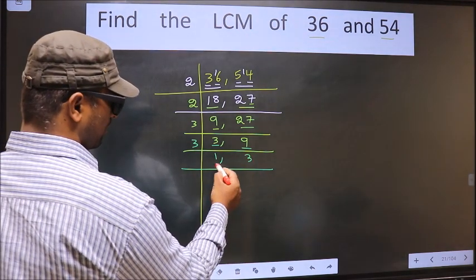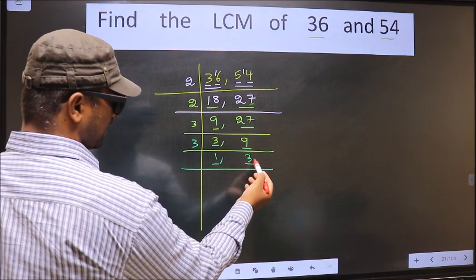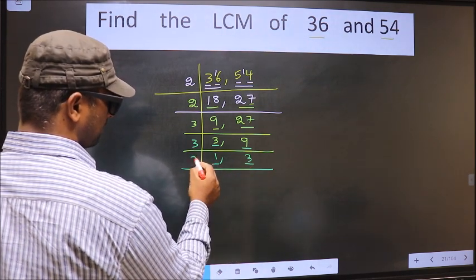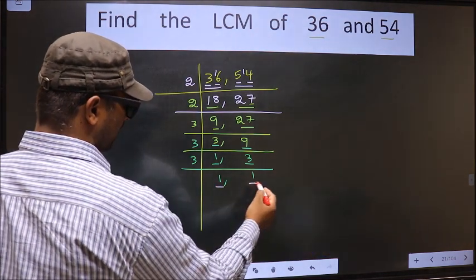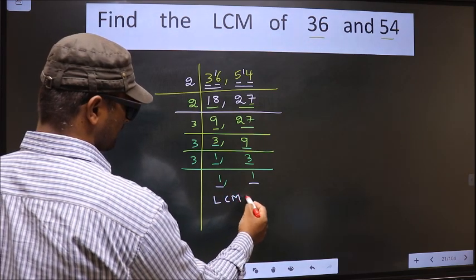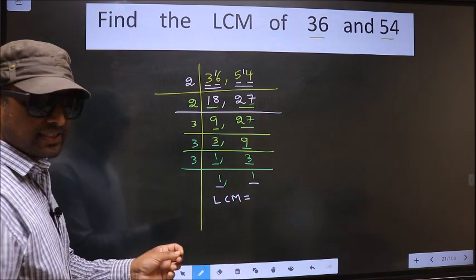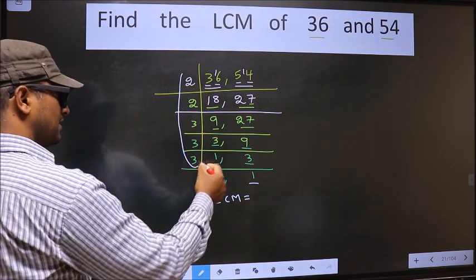Now we got 1 here. So focus on the other number, that is 3. 3 is a prime number, so 3, 1's, 3. We got 1 in both the places. So our LCM is the product of these numbers.